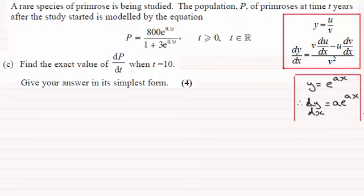So let's start then by using the quotient rule. So for the quotient rule then, we've got therefore dp by dt equals, we start with the bottom of the fraction, so we just put that up as 1 plus 3e to the power 0.1t, and we multiply this by the differential of the top of the fraction.